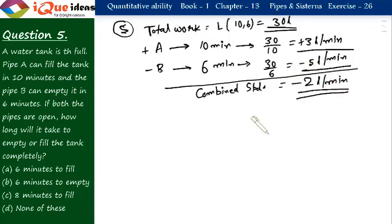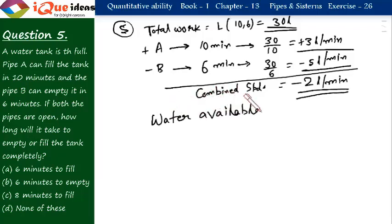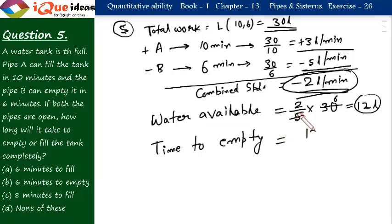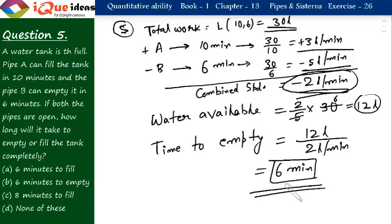Since the tank is 2/5 full, water available = 2/5 × 30 = 12 liters. At a net emptying speed of 2 liters per minute, time to empty = 12 ÷ 2 = 6 minutes. The tank will be emptied in 6 minutes because the speed of emptying is higher.